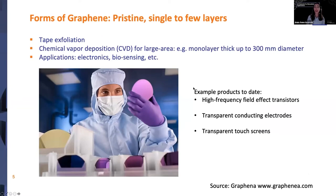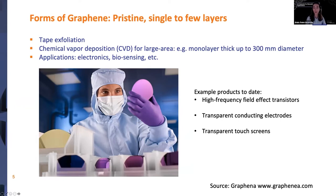There are different forms of graphene — it can be pristine graphene grown as single or few layers. One method now for large area is chemical vapor deposition, where we can have monolayer-thick material up to 300 millimeters in diameter or bigger. Applications for this type of graphene include electronics, biosensing, and many others. Products developed to date include high-frequency field effect transistors and transparent conducting electrodes, which are also flexible and used for transparent touch screens.